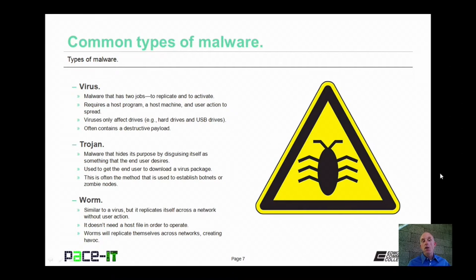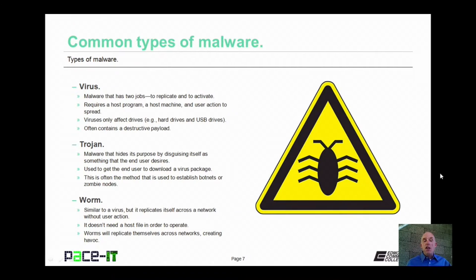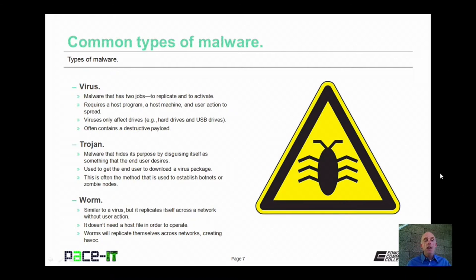Then there are Trojans. This is malware that hides its purpose by disguising itself as something that the end user desires, like a free game or a video of kittens on the internet. They're used to get the end user to download a virus package. Trojans are often the method used to establish botnets or zombie nodes.